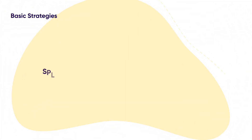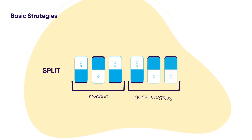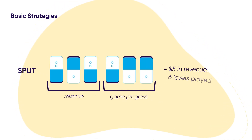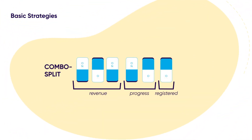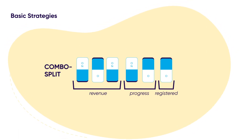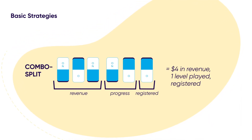Next up, you can split them two ways: 3 bits for measuring revenue, for example, and 3 bits for measuring game progression. Here, the user spent $5 and completed 6 levels. Finally, you can use the combo split, which combines the split method we just saw plus a deterministic on-off signal. Here, the last bit is used to verify whether the user has completed registration or not.